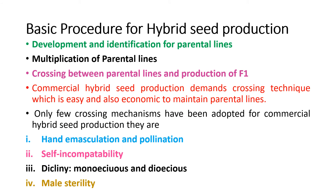Basic procedure for hybrid seed production: number one is development and identification of parent lines; number two, multiplication of parental lines; number three, crossing between parental line and production of F1. Commercial hybrid seed production demands a crossing technique that is easy and economical. Only few crossing mechanisms have been adopted: hand emasculation and pollination, self-incompatibility, dicliny (monoecious or dioecious — natural in unisexual plants), and male sterility.